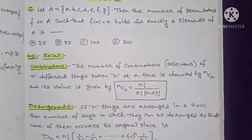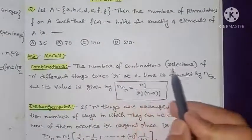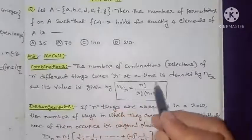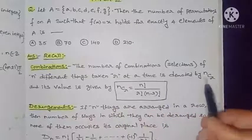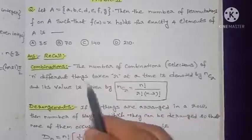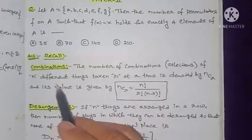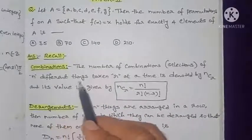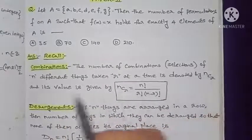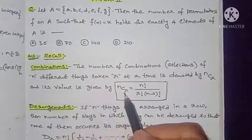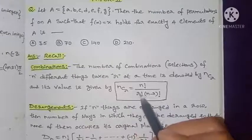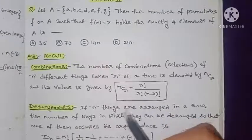First definition — combinations: the number of combinations, that means selections, of n different things taken r at a time is denoted by nCr. Its value is given by nCr = n! / (r! × (n − r)!).